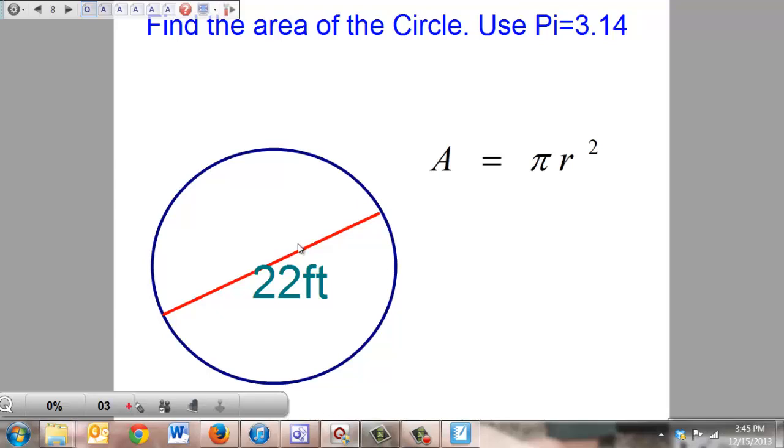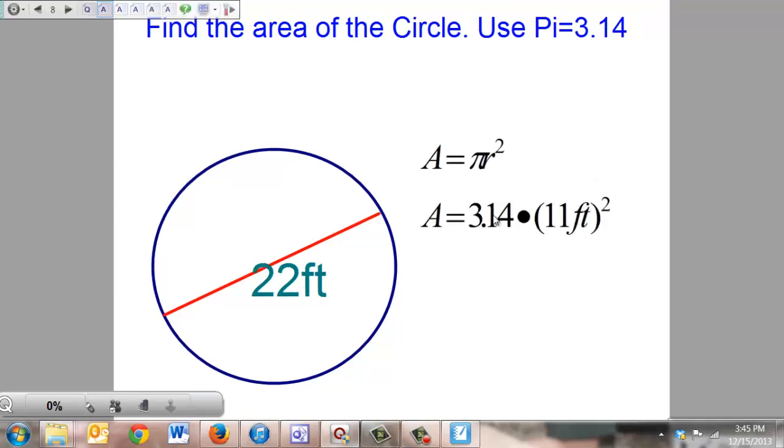If we use a fraction, we're going to use the other representation of pi, which is 22 over 7. So next, we're going to plug in what we know. We know that pi is 3.14. We know that our radius is 11 feet.